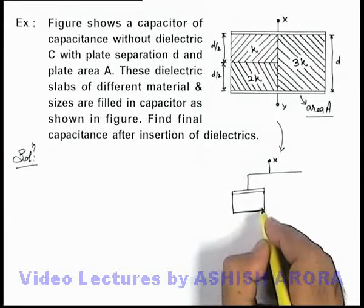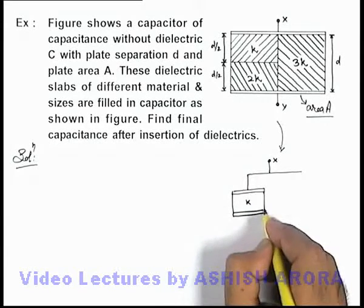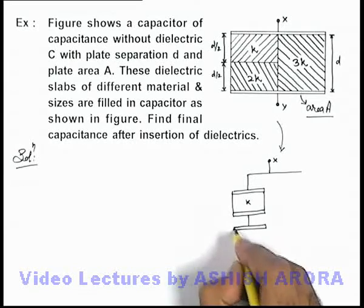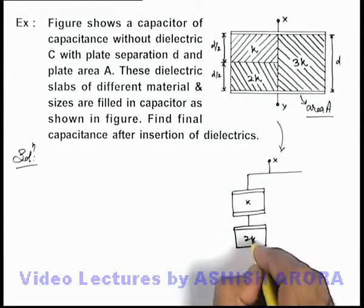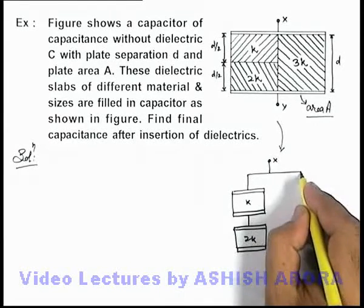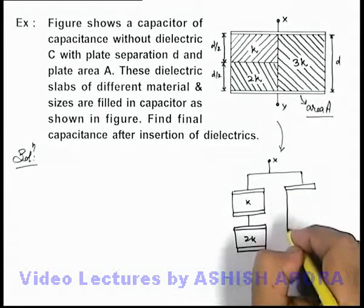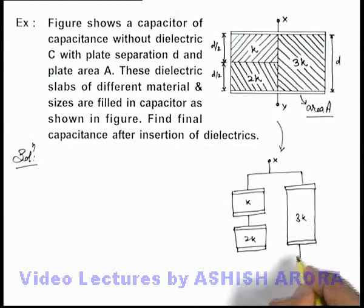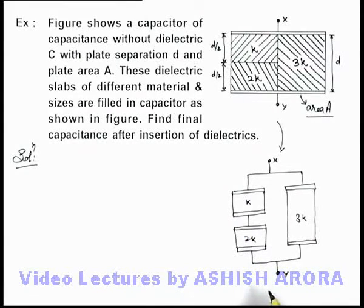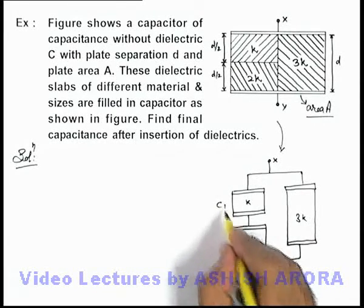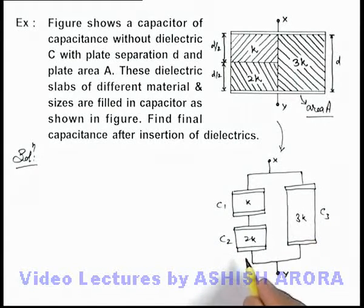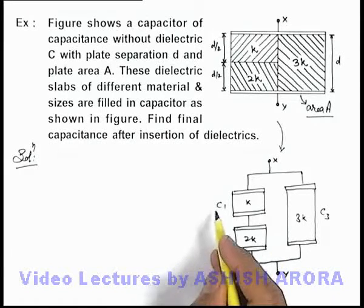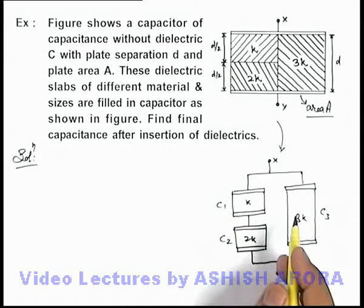There is a dielectric slab of dielectric constant k, then another dielectric slab of dielectric constant 2k, and a slab of dielectric constant 3k connected in parallel combination with the dielectrics k and 2k in series. If this is of capacitance C1, this is C2, and this is C3, we can easily find the equivalent capacitance of this combination. Let us first calculate C1, C2, and C3.